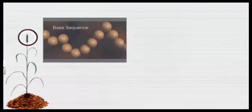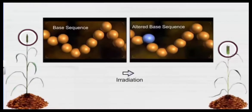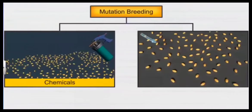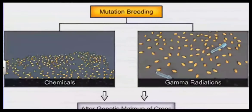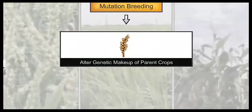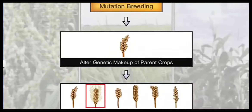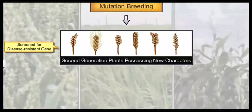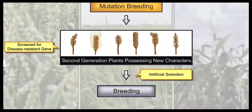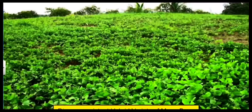In mutation breeding, we first study the base sequence which is responsible for the disease in that crop. Then with targeted irradiation, we can alter that particular sequence and a resistant variety can be developed. These chemicals are called mutagens, or there might be some radiations like gamma radiations used for this process. The altered genetic makeup of the parents can be tested in the offspring for that particular desirable trait, and if we get the desirable trait, then through artificial selection and further breeding we can develop new varieties.